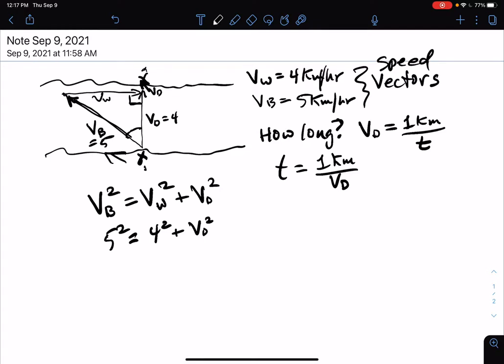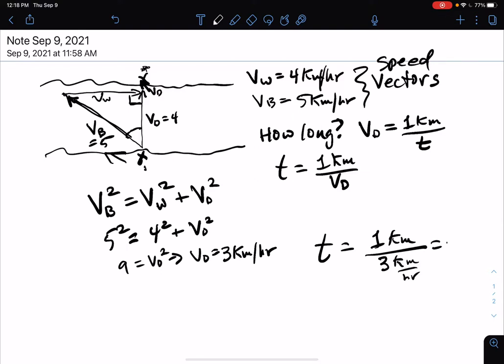So, V desired has got to, will end up appearing to be, from the standpoint of someone on this distant shore, they're going to see you coming straight across. Even though you're angled off to the left, they're going to see you coming across at three kilometers per hour, which means I can now answer my question. The time is going to be one kilometer divided by three kilometers per hour. So, that's one-third, or 0.33 repeating, hours. That's how long it's going to take to cross.